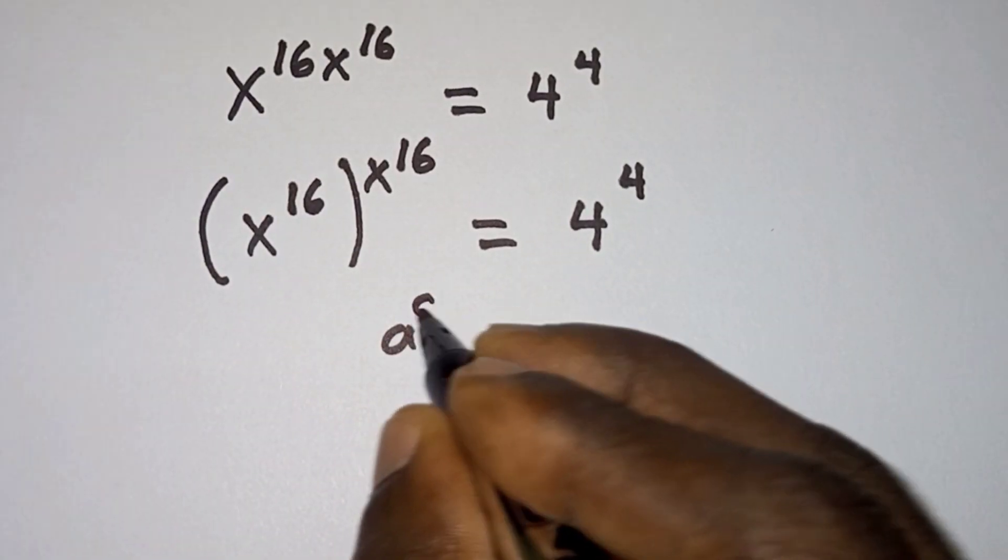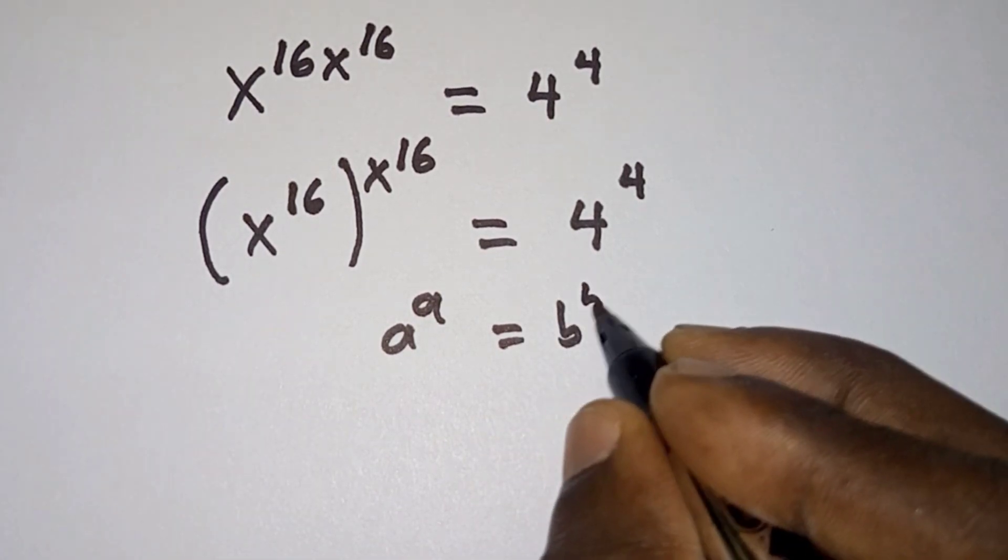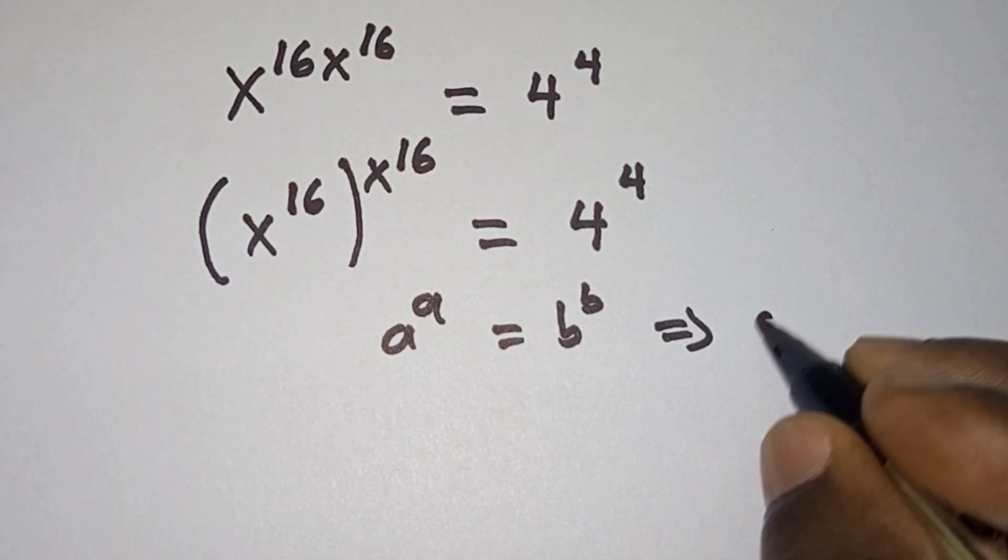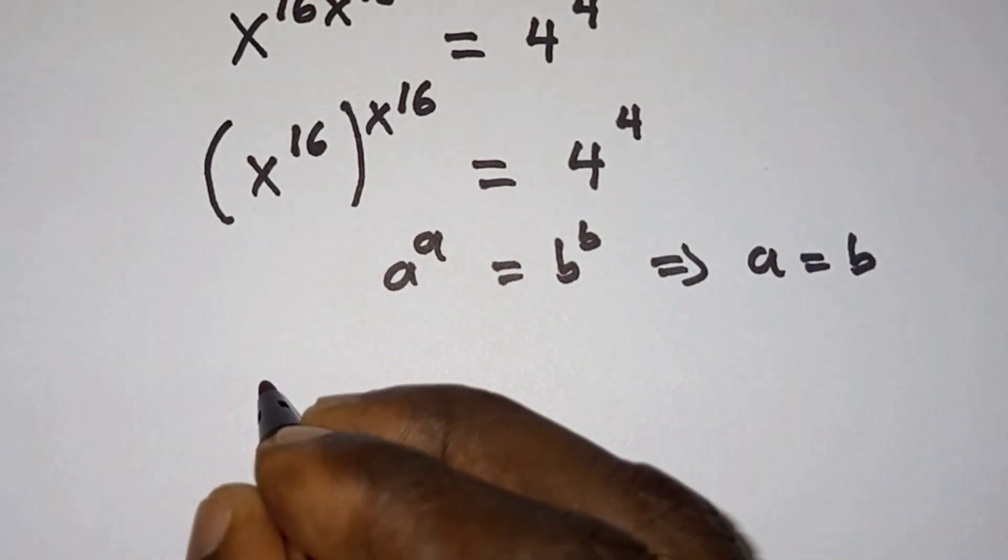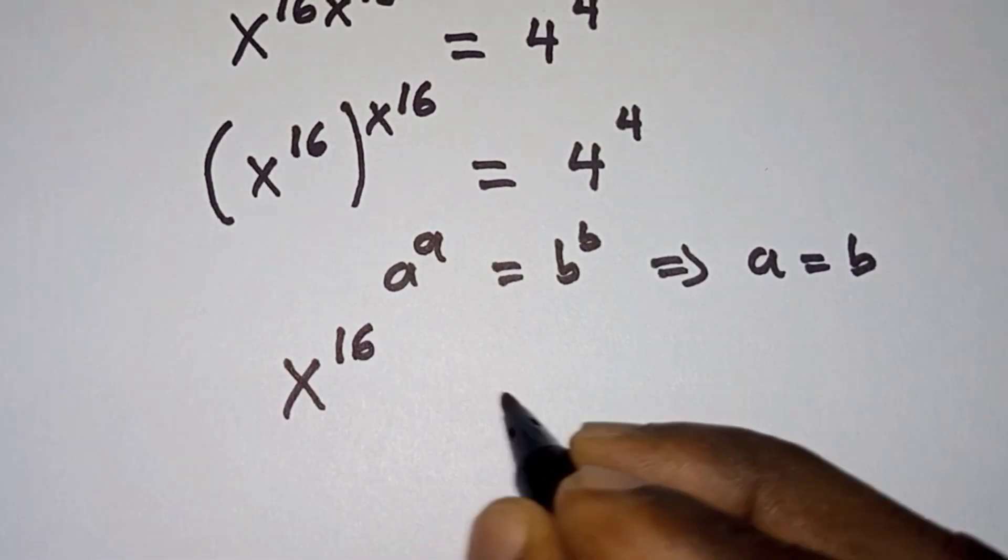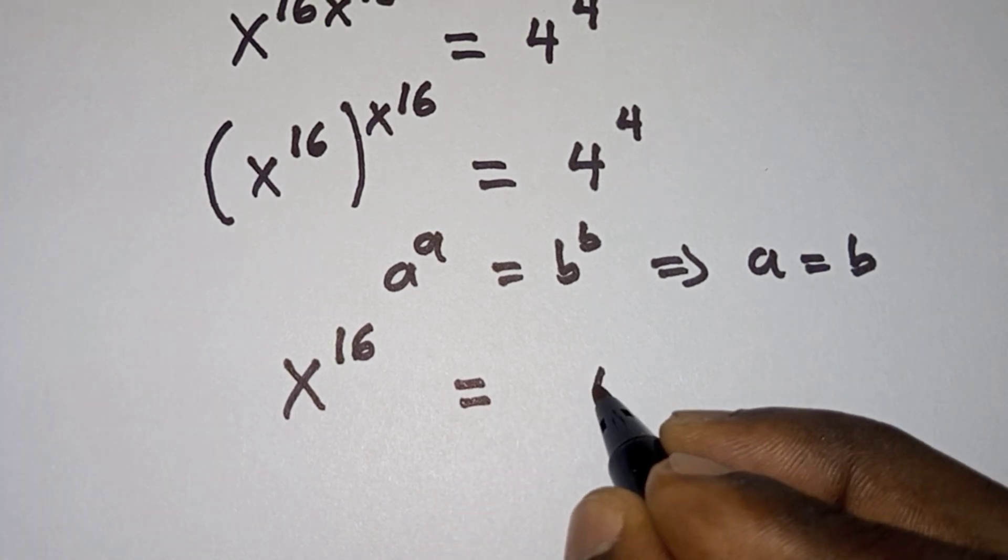Now note that if you have a to the power a equals b to the power b, then this implies that a is equal to b. So therefore, we have x to the power 16 is equal to 4.